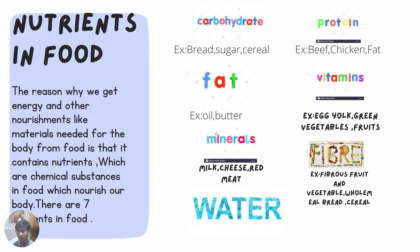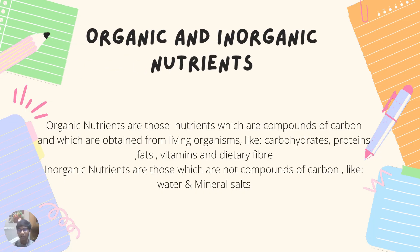Fibrous fruits provide roughage or dietary fiber, and we can also obtain fiber from wholemeal bread and cereal. Organic and inorganic nutrients are the two main types. Organic nutrients are derived from carbon and are obtained from living organisms — carbohydrates, proteins, fats, vitamins, and dietary fibers are the five types. Inorganic nutrients are non-carbon compounds like water and mineral salts.